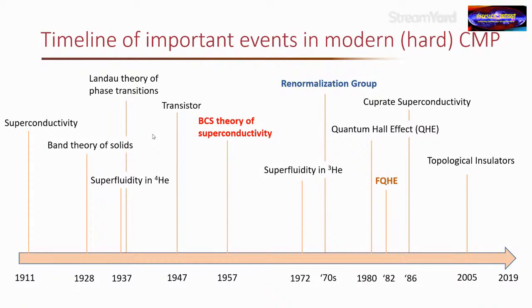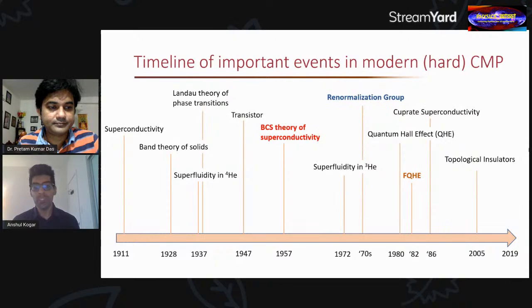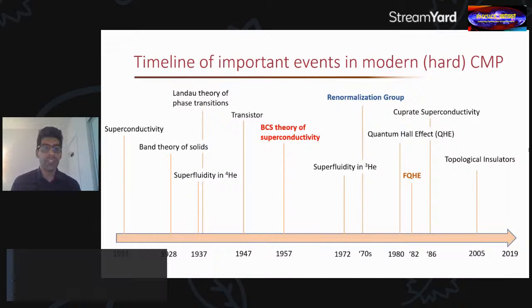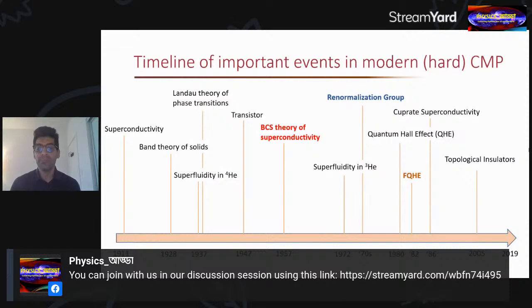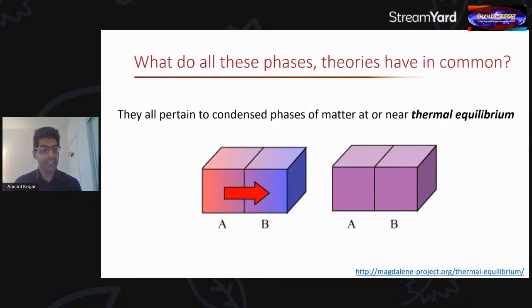Superconductivity is where a material, when cooled down to low temperatures, exhibits absolutely zero resistance, so electricity can flow without resistance. A few of these other discoveries are more esoteric, but one thing they all have in common is that all of these phases of matter exist in thermal equilibrium — meaning nothing is changing as a function of time. The liquid has its properties, the solid has its properties, and nothing changes.